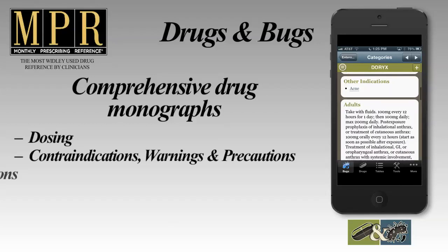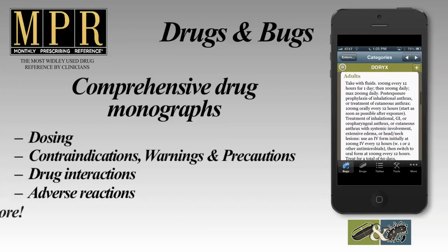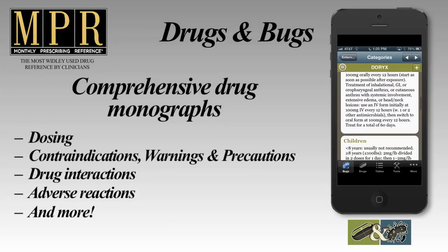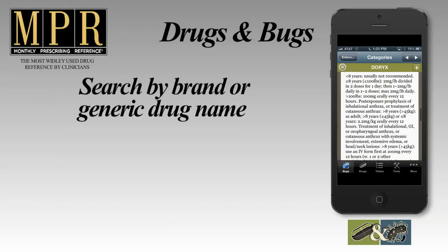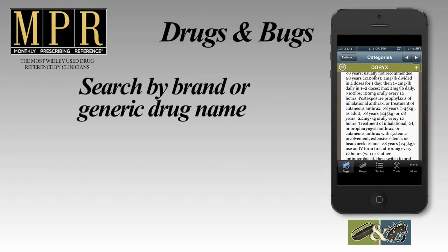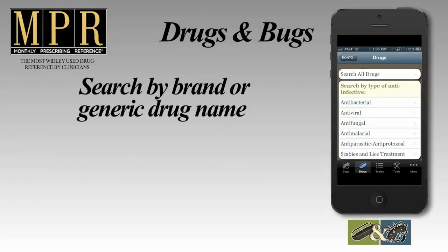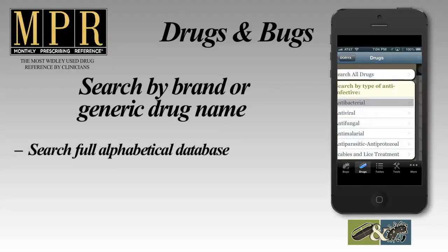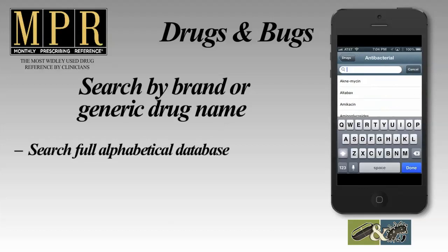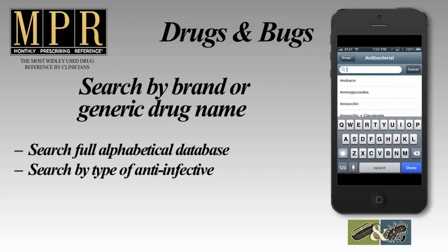Additional drug monograph details include warnings and precautions, drug interactions, adverse reactions, and more. Do you want to find a drug quickly by brand or generic name? Tap Drugs in the navigation bar to search by type of anti-infective. You can search the full alphabetical database by selecting Search All Drugs or view scrollable lists of drugs by anti-infective type.